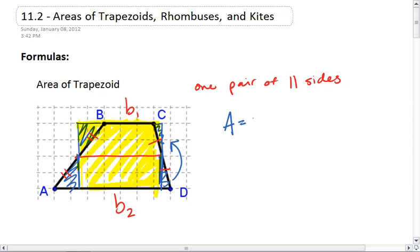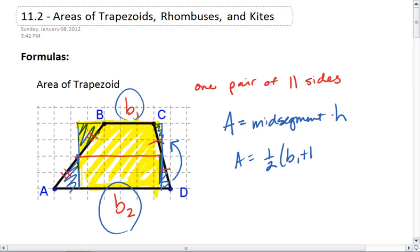The area for a trapezoid is the midsegment times the height, but our midsegment is the average of the two bases. We can rewrite this as one-half base 1 plus base 2 times the height.